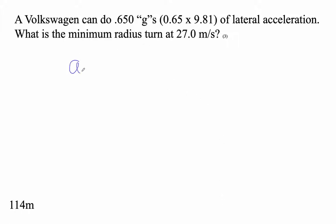Okay, so our centripetal acceleration, 0.65 g's, means it's 0.65 times 9.81. So let's do that. 0.65 times 9.81. That is 6.3765 meters per second squared, right?